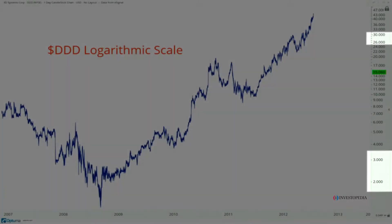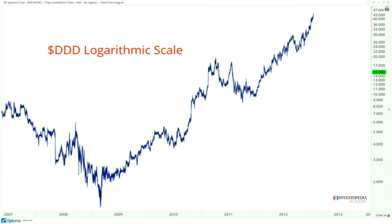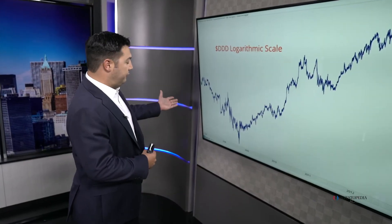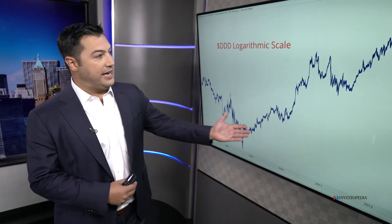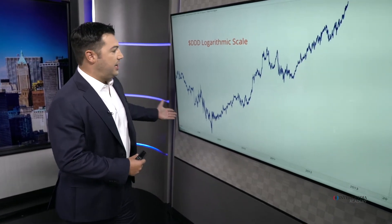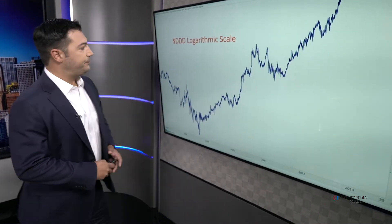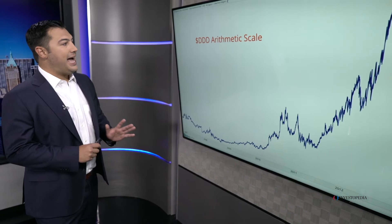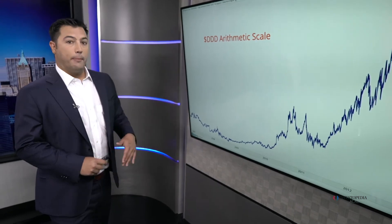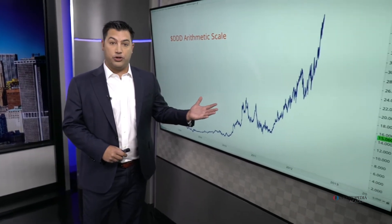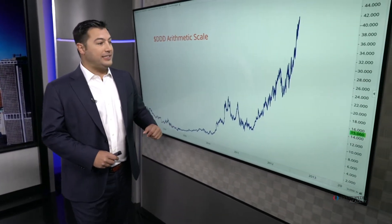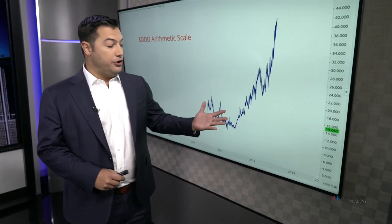Here we are looking at shares of 3D Systems (ticker: DDD) from 2007 to 2013 in a beautiful uptrend. Now we're looking at the exact same chart but on an arithmetic scale — this is a linear chart.